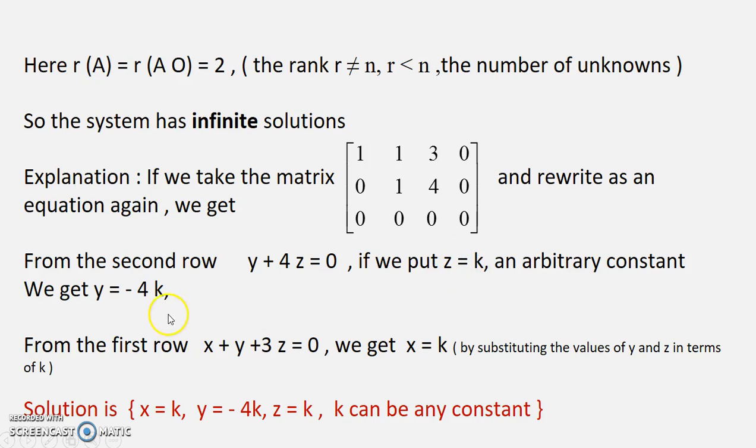Now when we put z and y in the first row, this is the first row when we write as an equation, we can obtain the value of x which is again k. That's just a coincidence you are getting the same value. It may be anything in terms of k.